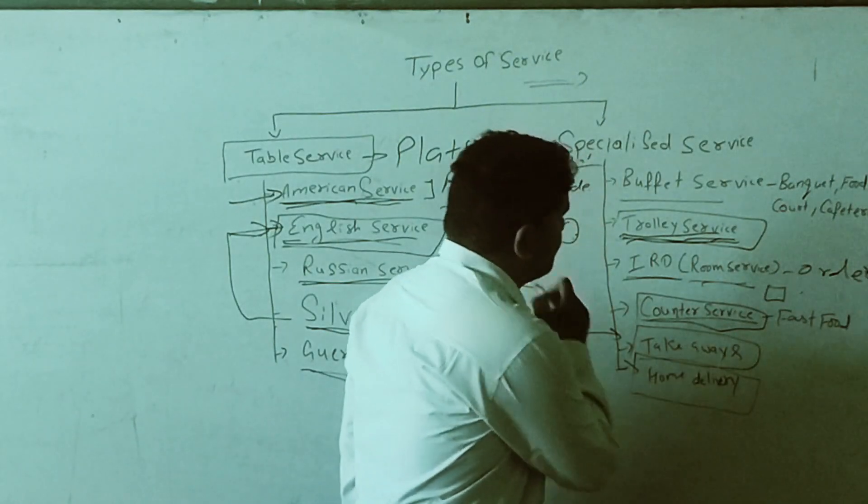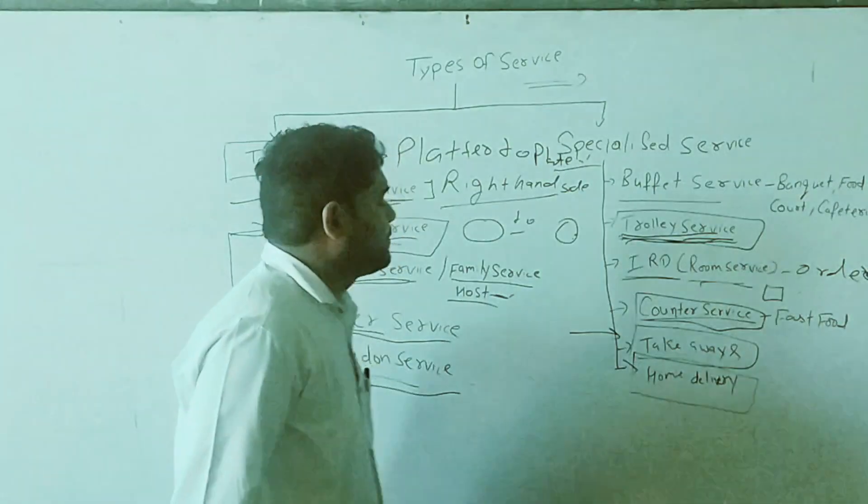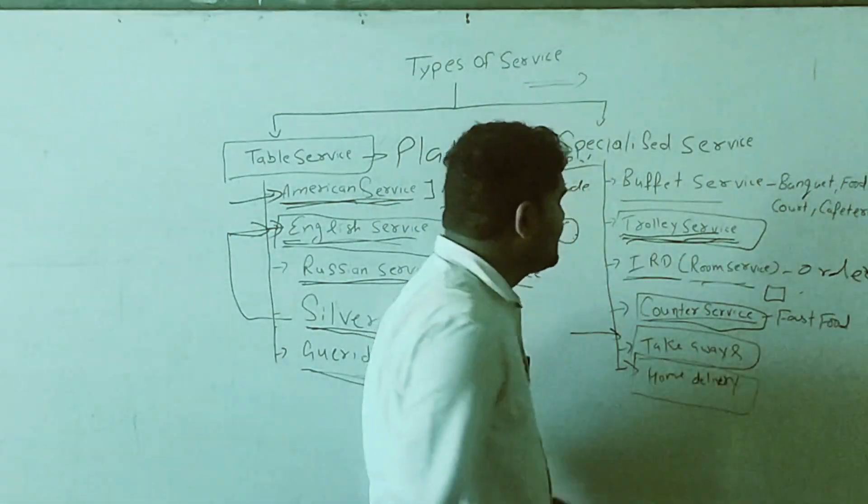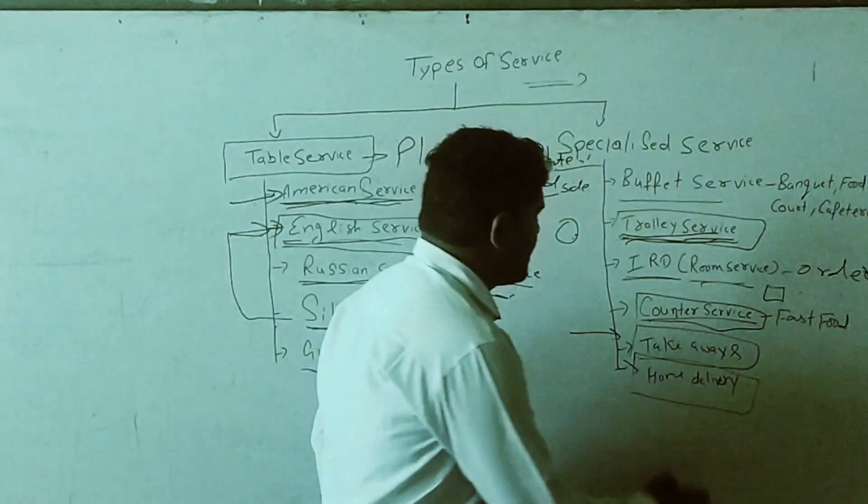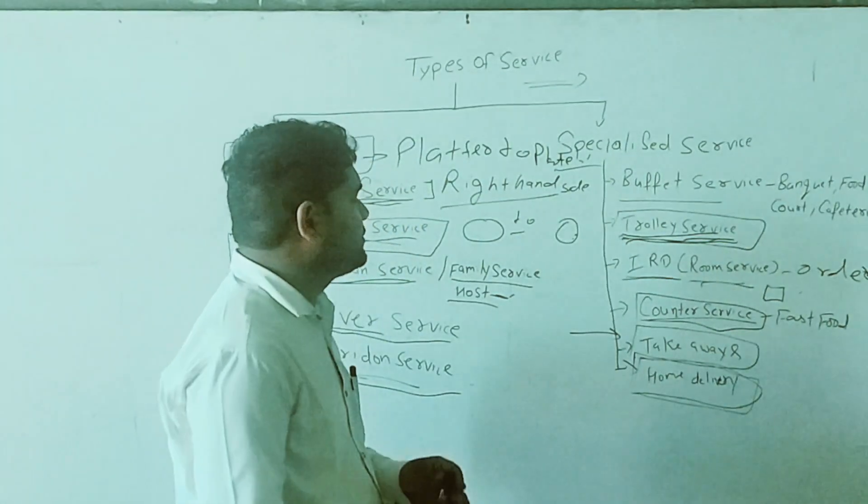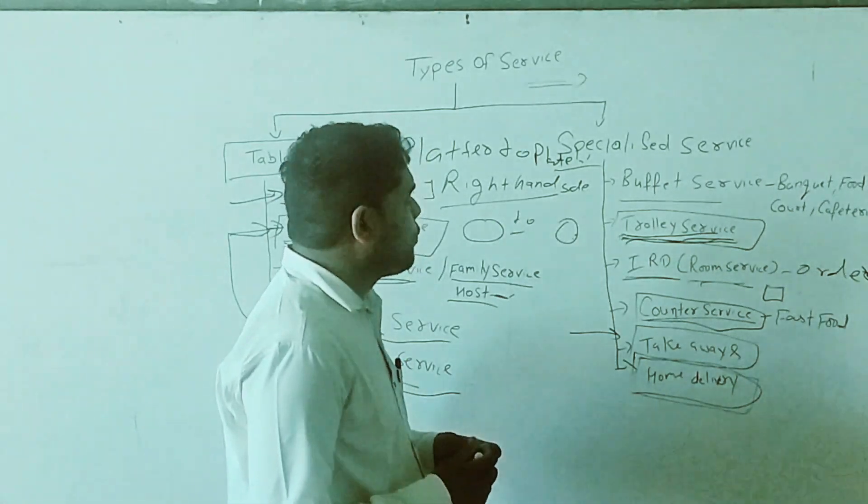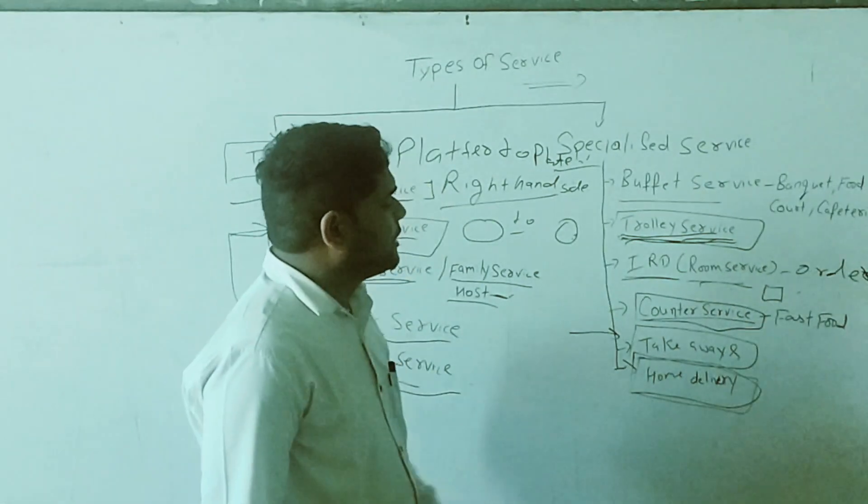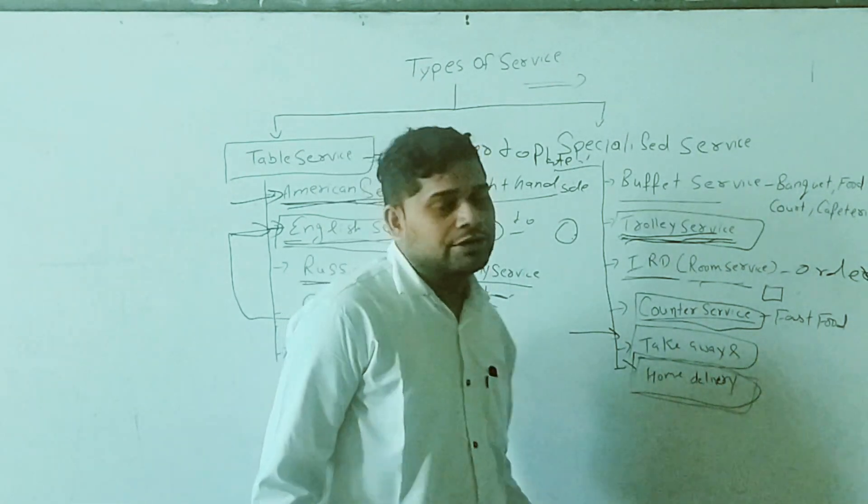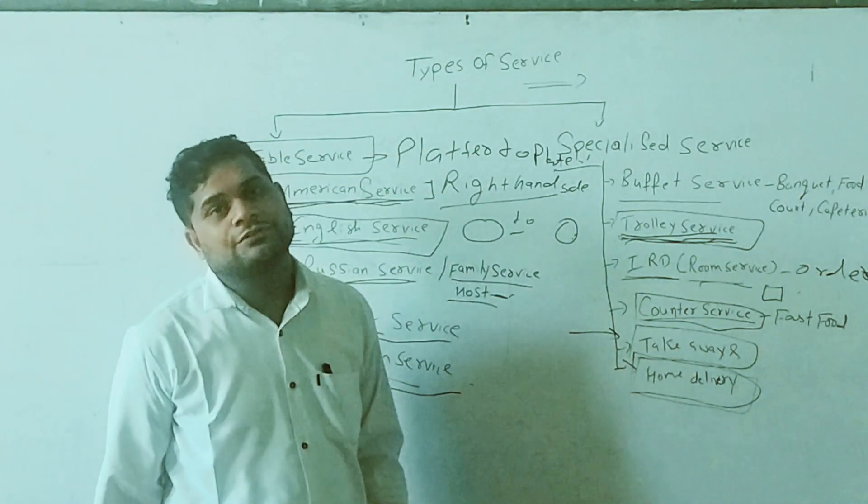And next one is takeaway. Takeaway is also a type of food service in which the guest places the order and takes home themselves. And the next one is home delivery. Basically this concept is very famous nowadays. You can deliver pizza and burgers, everything at the home. And nowadays it's also very famous in Flipkart and Amazon.